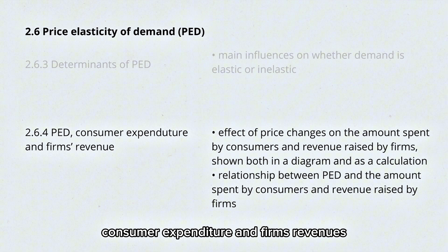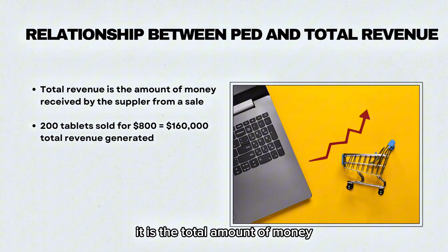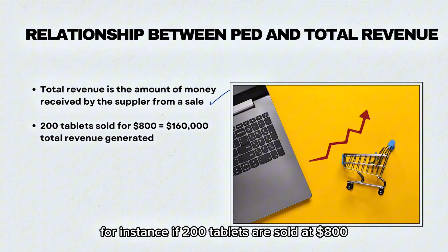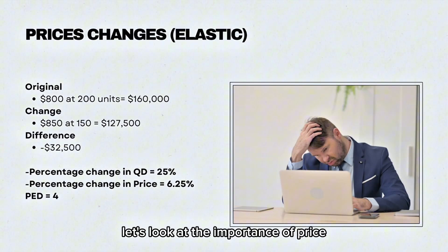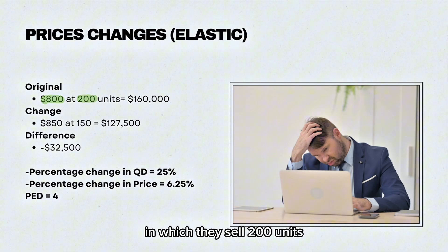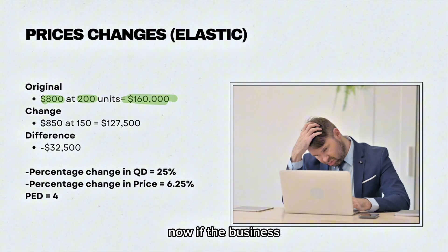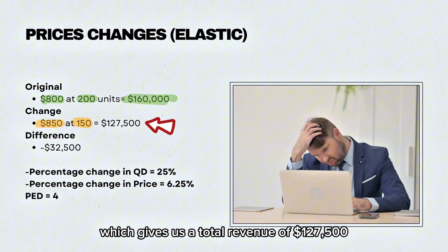Moving on to PED, consumer expenditure, and firm revenues. Total revenue is the total amount of money received by the supplier from a sale. For instance, if 200 tablets are sold at $800, the total revenue generated is $160,000. Originally the business is charging $800 for their product and selling 200 units, giving $160,000 of revenue. If the business decides to increase their price by $50 to $850, they will now sell 150 units, which gives a total revenue of $127,500.